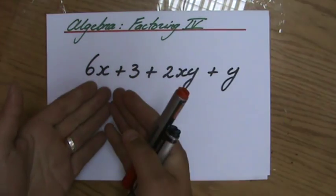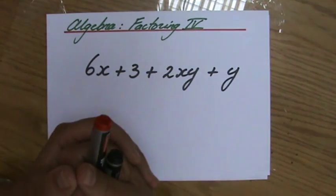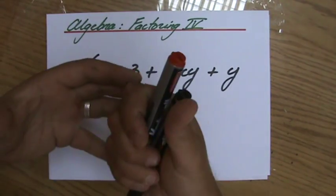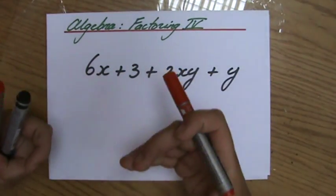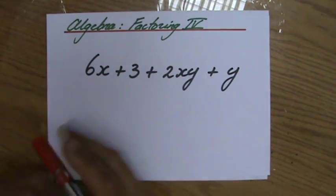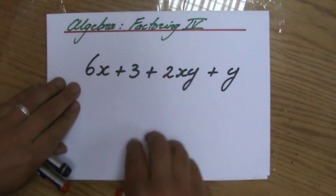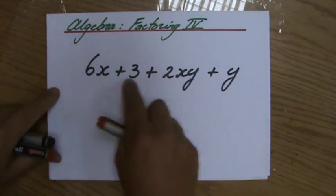6x plus 3 plus 2xy plus y. Now, as you can see, it has four terms. And this example, or this type of factoring, is very different from all the other ones. So if you have a little bit more experience, you will very quickly identify the grouping method, because it has four terms. And how do you approach it? Well, first of all, you ask yourself: is there a common factor?